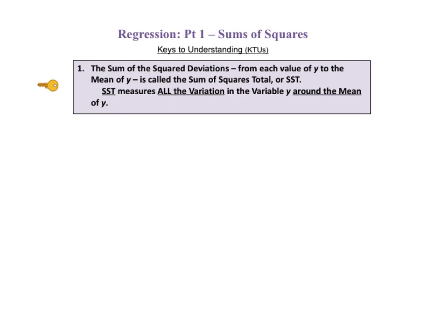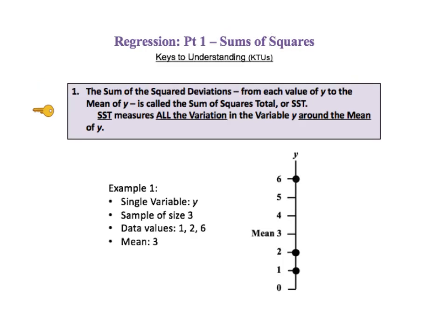Key to understanding number one tells us that the sum of the squared deviations from each value of y to the mean of y is called the sum of squares total, or SST. SST measures all the variation in the variable y around the mean of y. Let's start with a very simple example. We have one variable called y. Since there is only one variable, the plot is one dimensional, up and down only. In this simple example, we have a sample of three data values of y. The three data values of y are 6, y equals 6, y equals 2, and y equals 1. And the mean of these data values is 6 plus 2 plus 1, which equals 9 divided by 3, giving us a mean of 3.